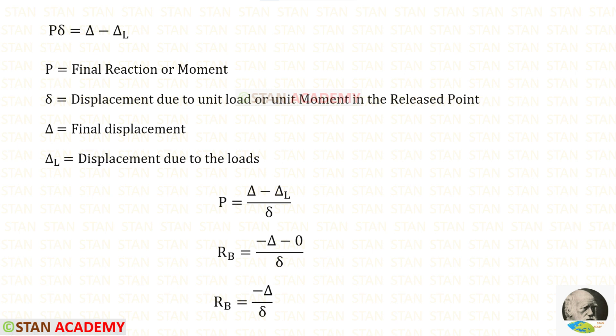We know the formula to find rb: p equals delta minus delta l upon delta. In the beam there is no load so delta l becomes 0. We know that the support b sinks by delta. The sinking occurs downwards, so it should be taken as minus delta.